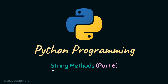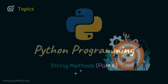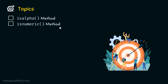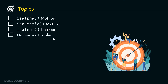Let's continue our discussion on string methods. This is part six of string methods. The topics we'll cover are: the isalpha method, the isnumeric method, and the isalnum method. After this, we will see one homework problem. Let's start with the first topic, which is the isalpha method.